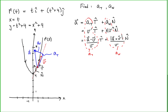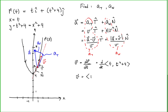Before deciding which method to use, let's find expressions for the velocity and acceleration of the curve. The velocity is the derivative of the position with respect to time — the derivative of (t, t²+4) — giving us a vector with components 1 for the x-component and 2t for the y-component.